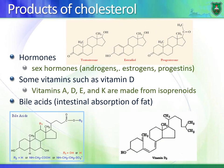From cholesterol we can make a lot of products, including many steroid molecules. Most commonly known are the sex hormones: androgens, estrogens, and progestins. All of these molecules have the steroid nucleus with methyl groups and hydroxyl groups. Notice the minor differences between molecules like progesterone, testosterone, and estradiol — they are structurally very similar.